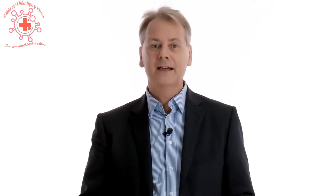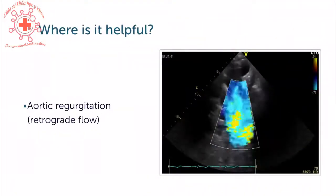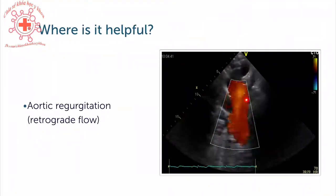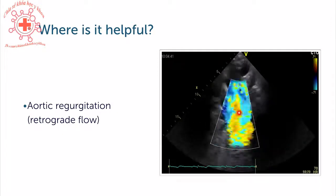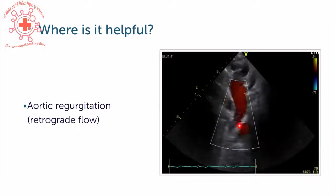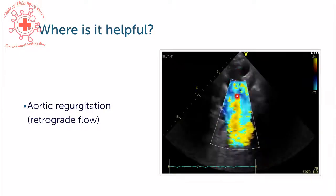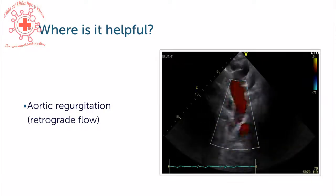The probably most frequent indication for the suprasternal view is to detect retrograde flow in the setting of aortic regurgitation. Here is an example of the descending aorta with color flow, and you can nicely appreciate that there is red color — in other words, flow towards the transducer during diastole — which denotes retrograde flow.